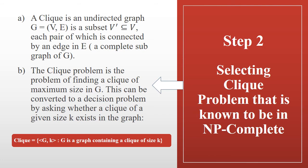Step two: we select the clique problem, which is already known to be NP-complete. A clique in an undirected graph G = (V, E) is a subset V' of vertices where every pair in V' is connected by an edge in E — that is, the induced subgraph is complete and covers all edges among those vertices.